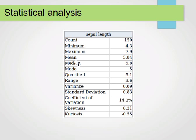This is a table of the values computed for the sepal length: count, minimum, maximum, mean, median, mode, quartile 1, range, variance, standard deviation, coefficient of variance, skewness, and kurtosis. All of these can be computed automatically using formulas from Microsoft Excel, or from OpenOffice or LibreOffice.